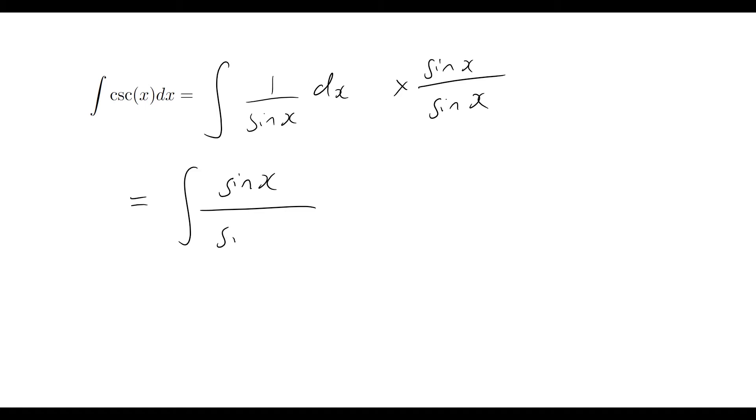So what this now allows us to do is we can now rewrite this problem out as the integral of sine x over sine squared x dx. So sine squared x, what is that equal to? We do have a very famous trig identity, which we should hopefully know. So that's 1 equals sine squared x plus cos squared x. So what that means for us now is that we can rewrite sine squared x as simply 1 minus cos squared x. So let's do that now.